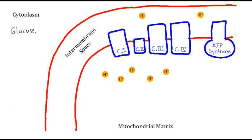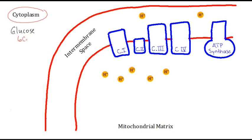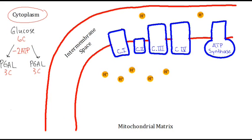First of all, as glucose enters into the cell, it's broken down in the cytoplasm through the process of glycolysis. Glycolysis takes glucose, which is a six-carbon molecule, and it breaks it down using two ATP into two PGAL molecules. Each of these is a three-carbon molecule, so glucose — the original six-carbon molecule — has been broken down into two three-carbon molecules. It requires energy to make this breakdown occur, so the first step of glycolysis uses two ATP molecules.